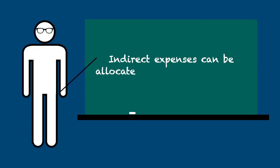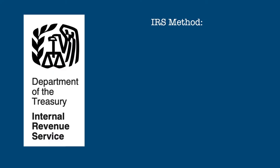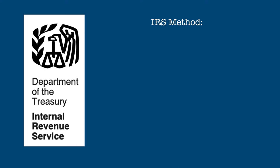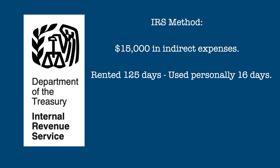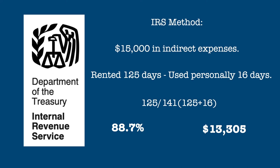Two methods are used to allocate these expenses. The most common method is the IRS method, which compares the days of rental use to the days of total use. For example, if the total indirect expenses of maintaining your vacation home are $15,000, and you rented the property for 125 days and used it personally for 16 days, you take the 125 days of rental use and divide it by the 141 days of total rental and personal use, which would allow you to deduct 88.7% of your expenses from your total rental income, or $13,305.